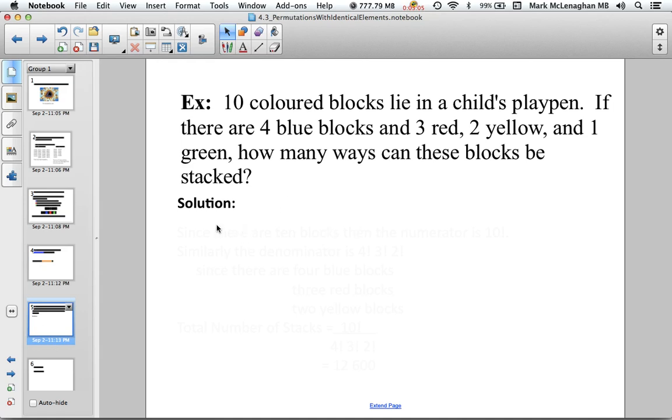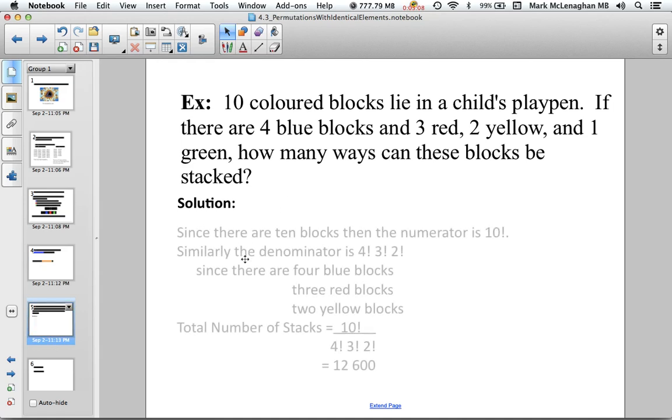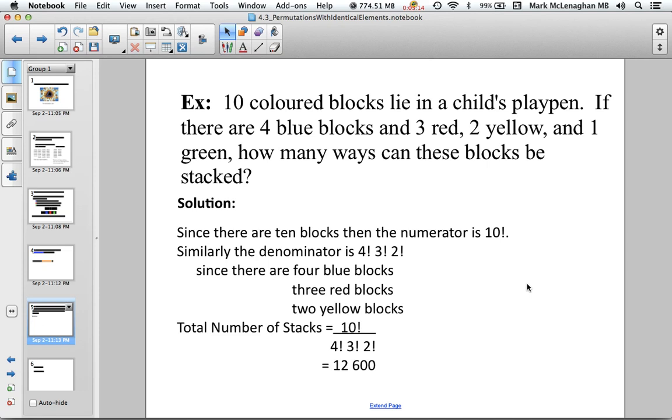So we know there's ten blocks. Since there's ten blocks, the numerator is going to be ten factorial. And similarly, the denominator is going to be four factorial times three factorial times two factorial.